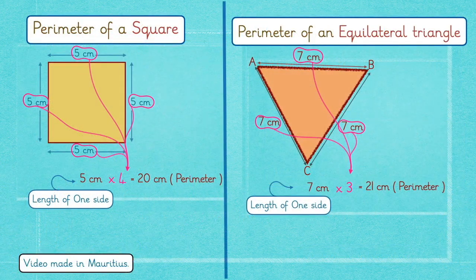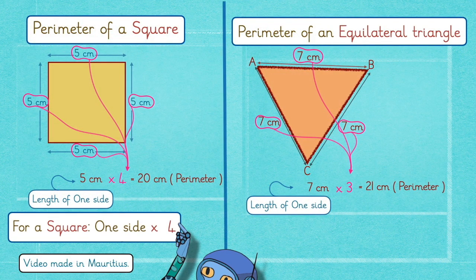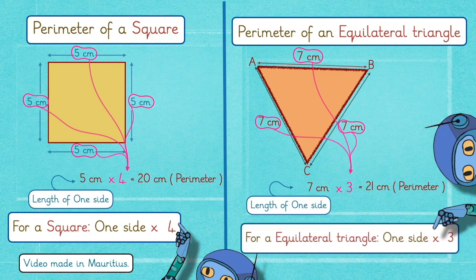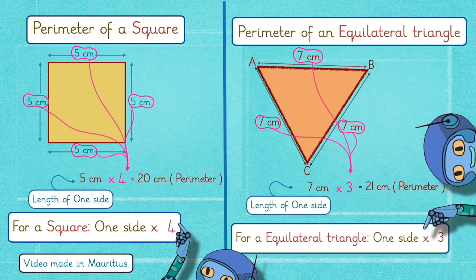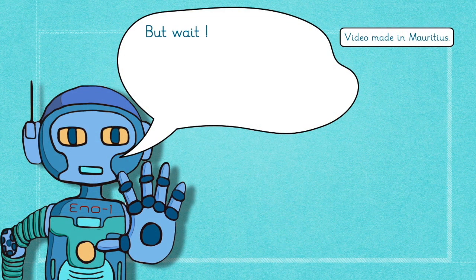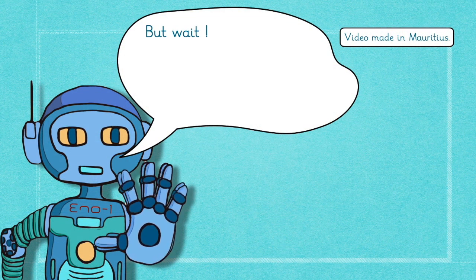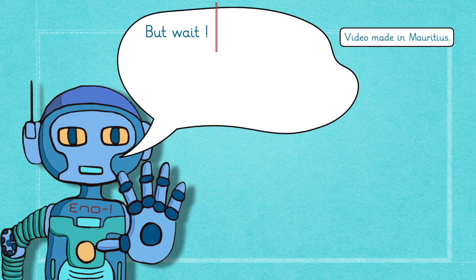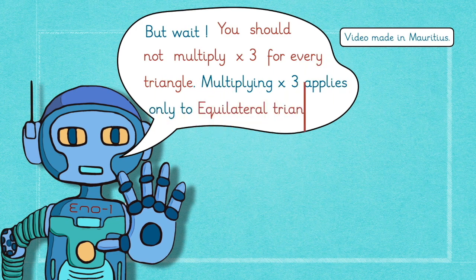So, Ava, as you can see, for a square, you take length of one side times 4. For an equilateral triangle, length of one side times 3. By the way, you should not multiply by 3 for every triangle. Multiplying by 3 applies only to equilateral triangles.